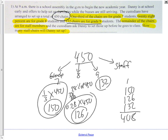Of the 450 chairs, 408 are for grades 7, 8, and 9. That means 42 are left over, which means 42 are for staff. The good news is 72% of this class got that correct.